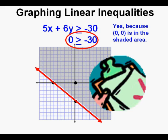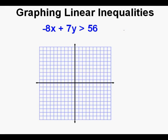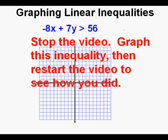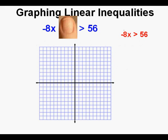Let's look at this one: negative 8x plus 7y is greater than 56. Remember that when it comes to graphing it's helpful to say 'not equal to, but greater than' to keep in mind the type of boundary line we need to draw before we even shade. Stop the video — I recommend getting out some graph paper and trying this one yourself. When you're finished, restart the video to see how you did. First, cover the y term. That leaves us with negative 8x is greater than 56. We solve for x by dividing both sides by negative 8. Since 56 divided by negative 8 equals negative 7, and since we divided by a negative number the sign will switch, we have x is less than negative 7. We place a point on the x axis at negative 7.